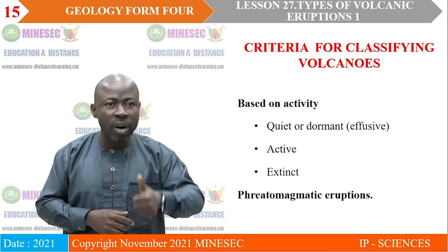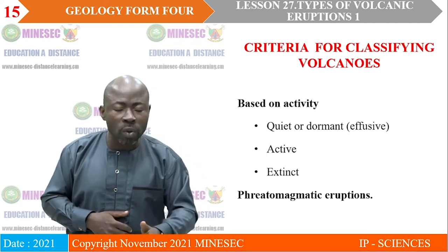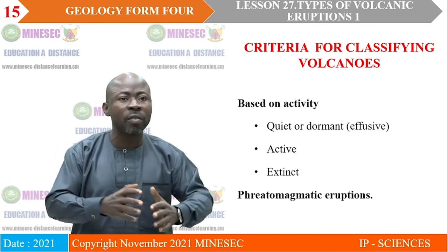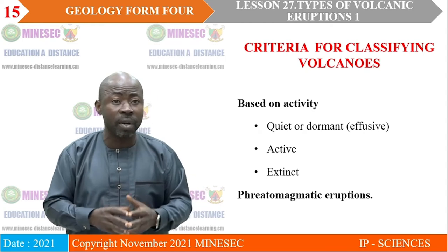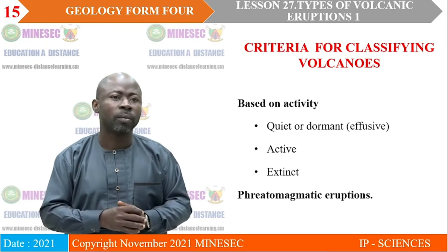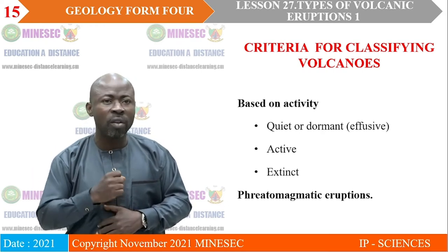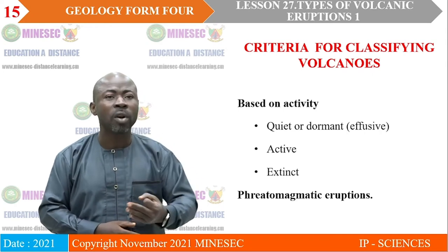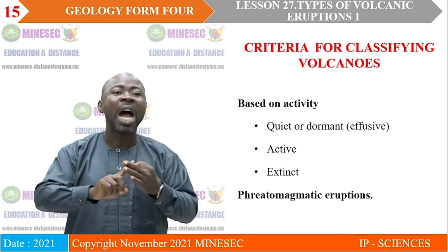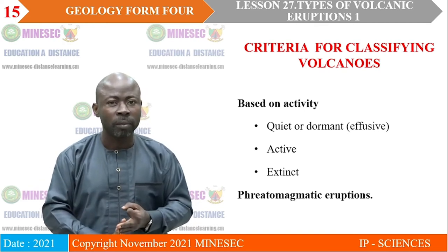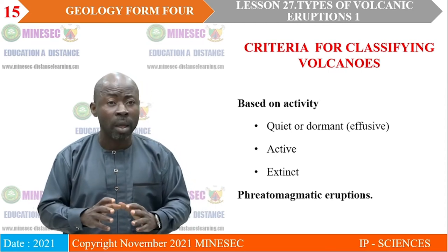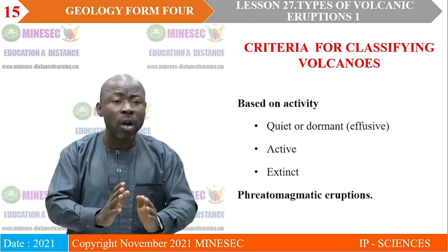The second category of volcanoes based on their activity are those that erupt quite often — the period of inactivity is not very long — and these are referred to as active volcanoes. Then we have the extinct volcanoes. Based on the activity of the volcanoes, there are three principal types: the dormant volcano, the active volcano, and the extinct volcano. Because these are processes that occur in nature, they are not fixed and not tied down to one principle.